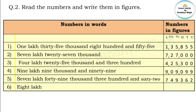Next number: eight lakh. Ten-thousands, thousands, hundreds, tens, and units were not mentioned, so write 8 in the lakhs place and zeros in all other places. Now let's put commas in between. The number is 8,00,000 — eight lakh.